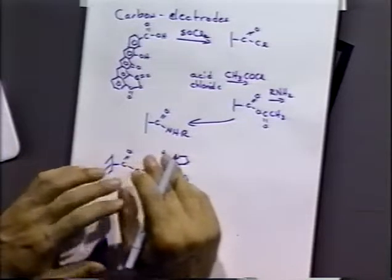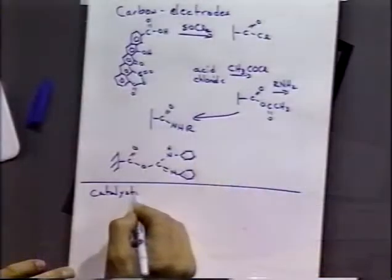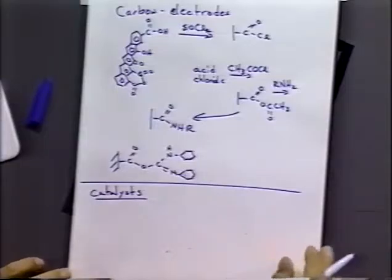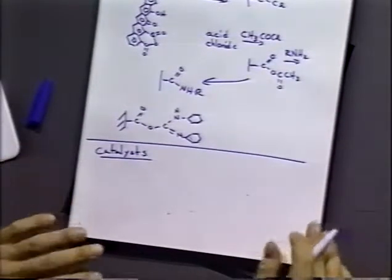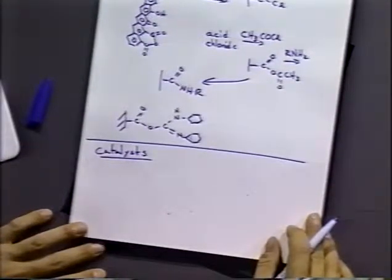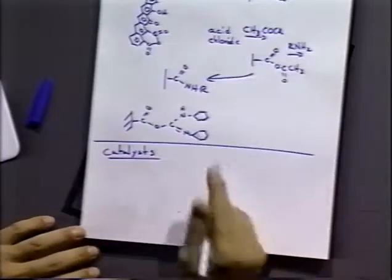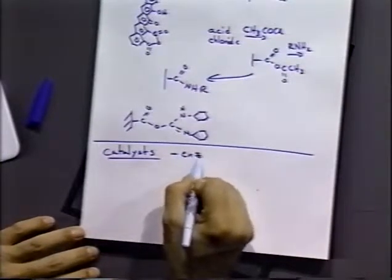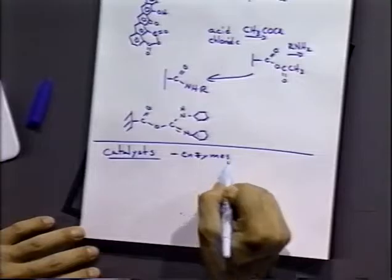So surface modified electrodes are not used for promoting chiral reactions as monolayers. But as catalysts, they actually work pretty well if you use catalysts that are appropriate. One example is using enzymes. Enzymes are just biochemistry catalysts.